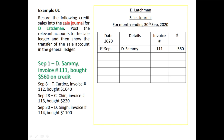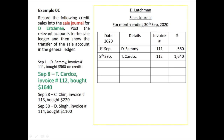Let's read the first transaction: 1st September, Sami, invoice number 111, bought $560 on credit. In the date column, place the 1st of September. In the detail column, place who we are giving credit to — Sami. In the invoice column, place invoice number 111. Then place the amount of $560 in the amount column.